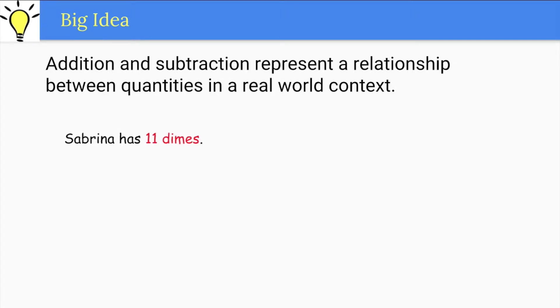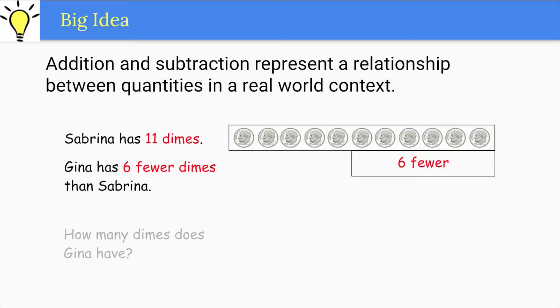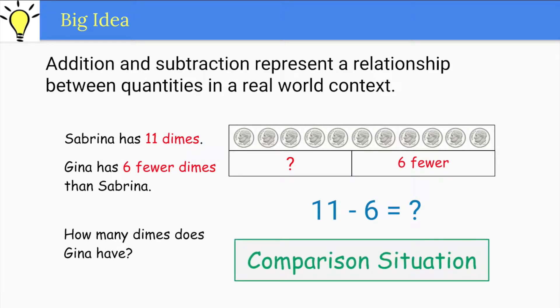The context may be an add-to, take-from, put-together, take-apart, or comparison situation. Any number in the relationship may be unknown. This relationship can be recorded symbolically with an equation. This unit is more challenging than Unit 1.6 because the focus is on comparison problems and unknowns that are not the result.